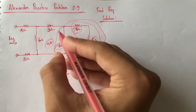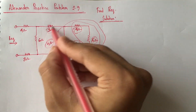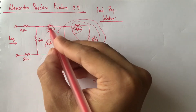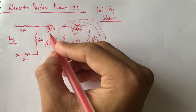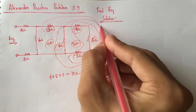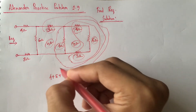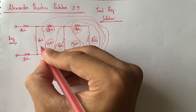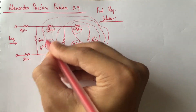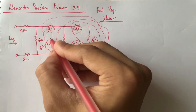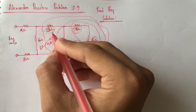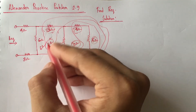Now, this 3 ohm resistance and this 3 ohm resistance are in series. Since these are in series, this 3 ohm and this 3 ohm will be added directly, which can be replaced by a resistance of 6 ohm.